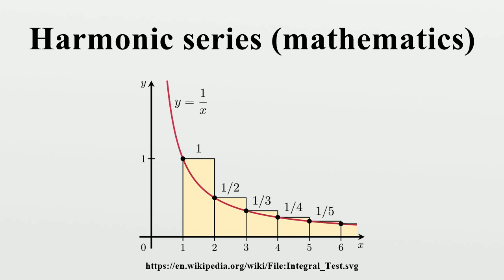However, the value of n at which this occurs must be extremely large, approximately e^100, a number exceeding 10^43. Although the harmonic series does diverge, it does so very slowly.